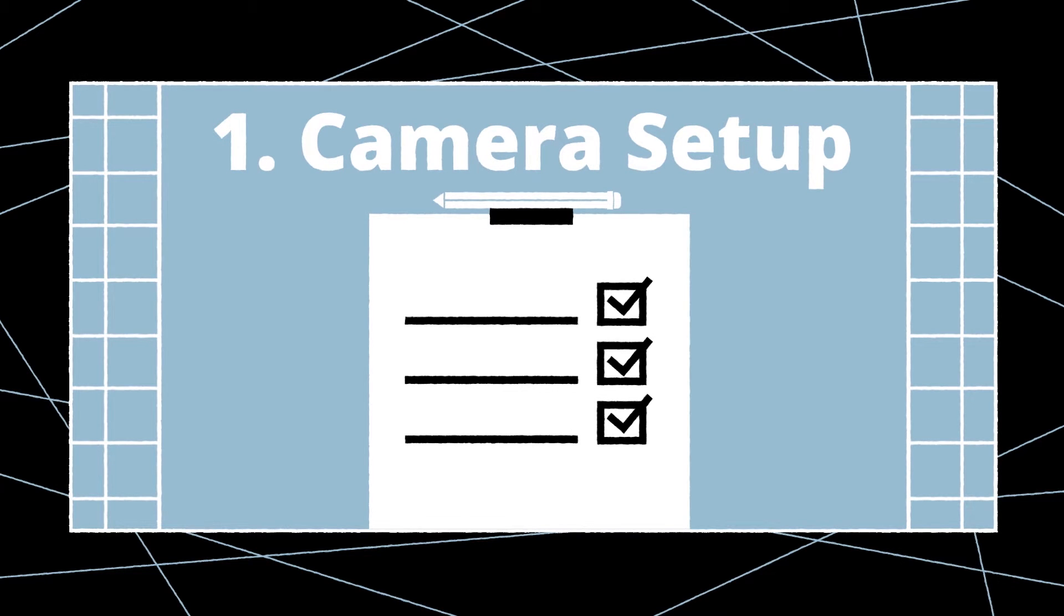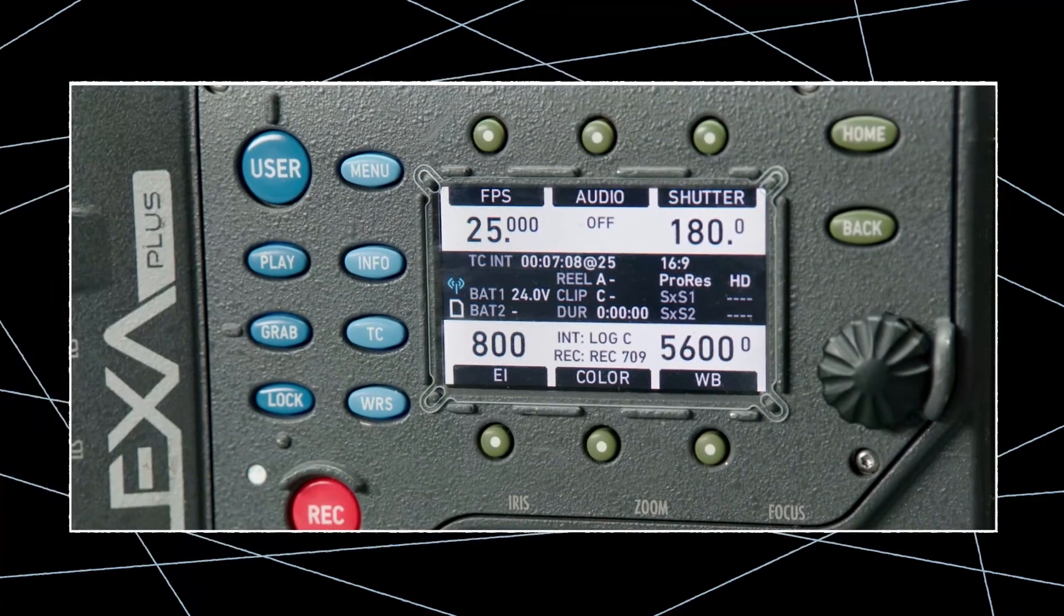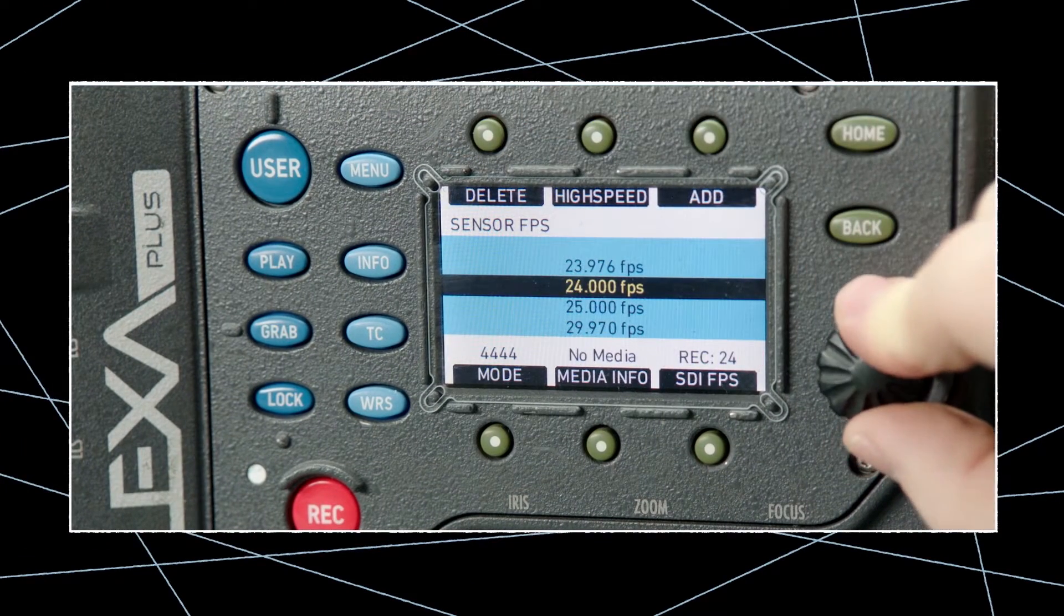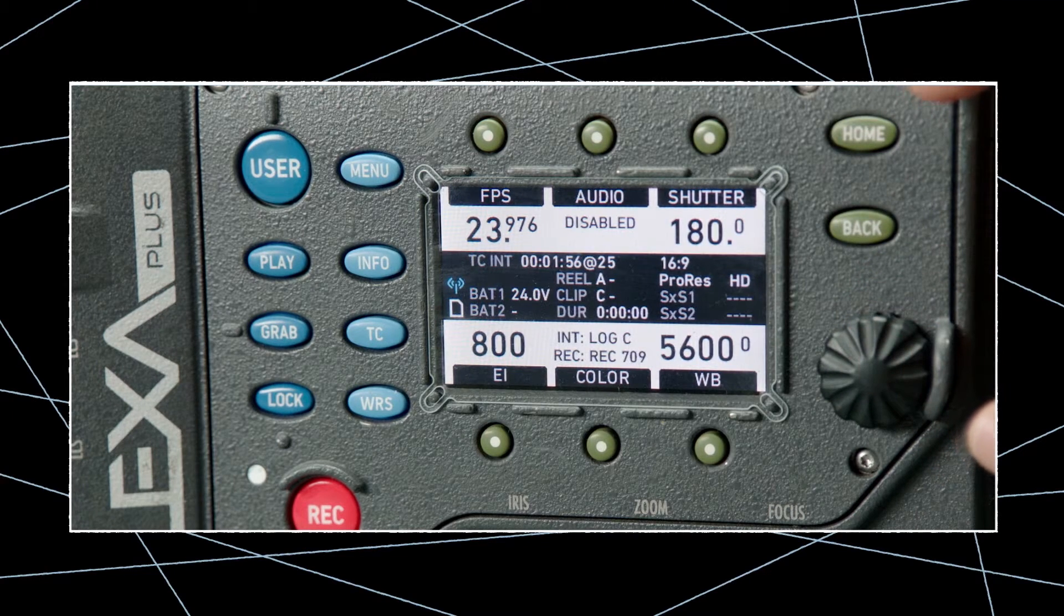Let's get started with setting up the ARRI ALEXA camera for external synchronization. Press FPS to change the sensor rate of your project timebase. Otherwise, your project frame rate might not be available further along in the setup process.